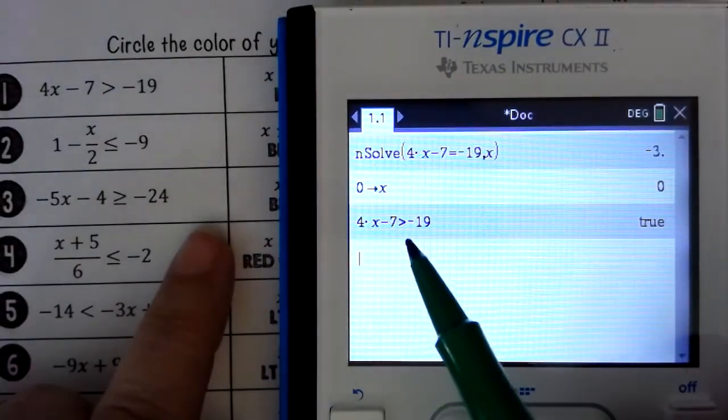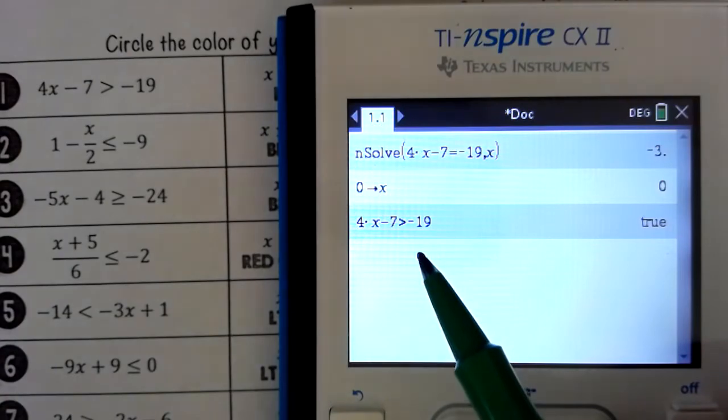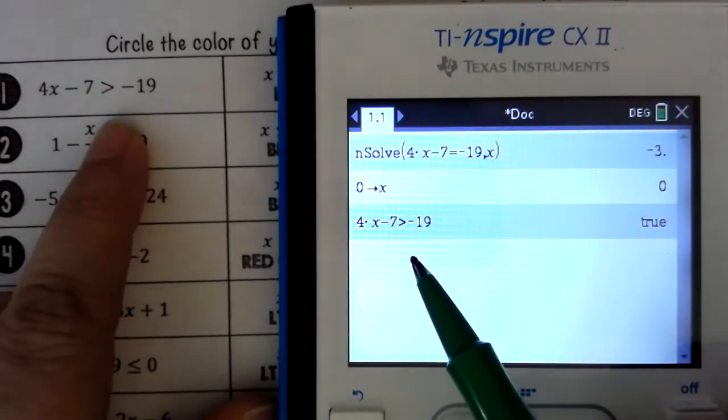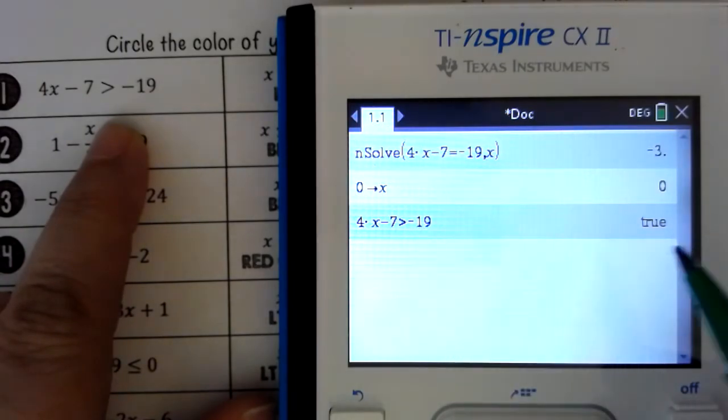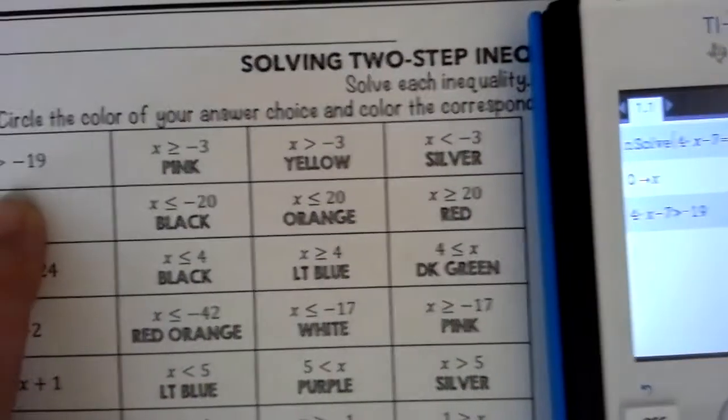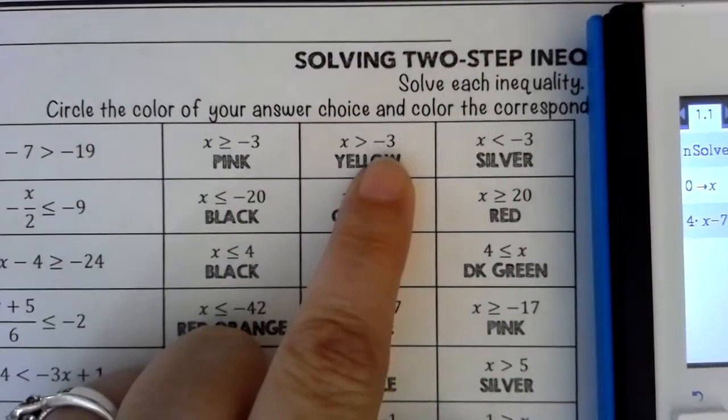And then it's going to either tell us a true or false statement. If it's true, then you keep the sign you have. If it's false, you flip the sign the other direction. But you do not change whether or not it's a greater than or equal to or less than or equal to based on that. Whatever it is, that's what it stays.